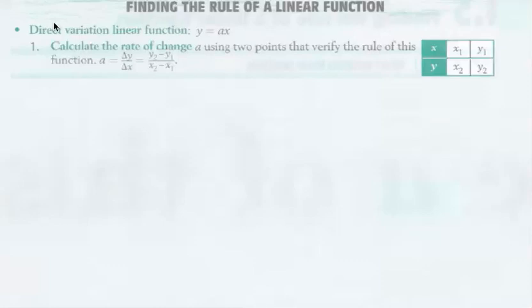Finding the rule of a linear function. So you have two instances. You have the direct variation and the partial variation. So we're going to be looking at the direct variation.